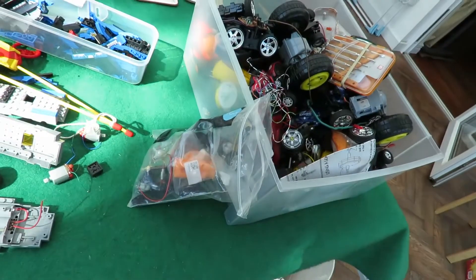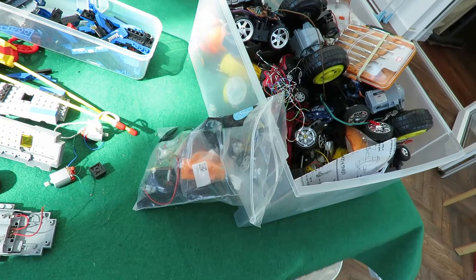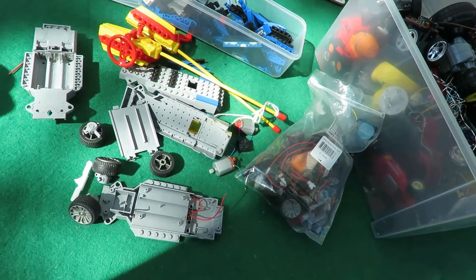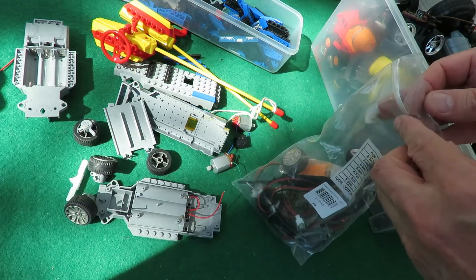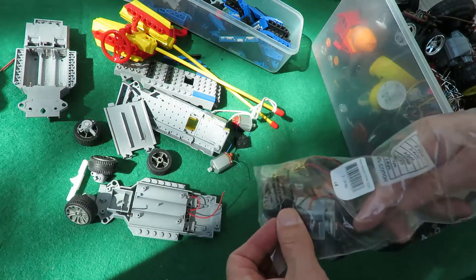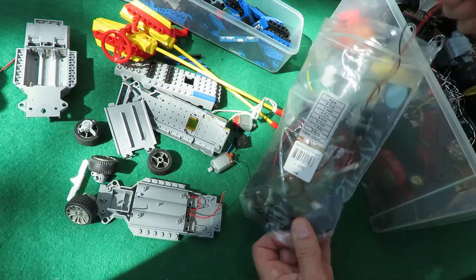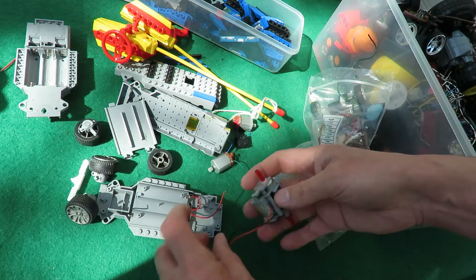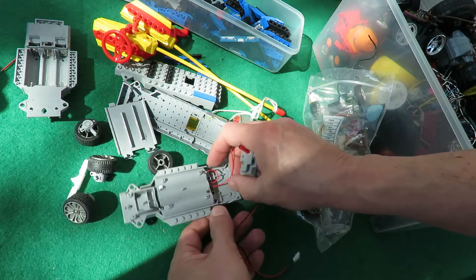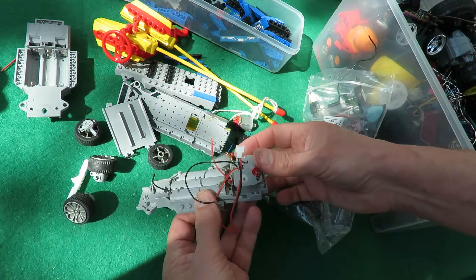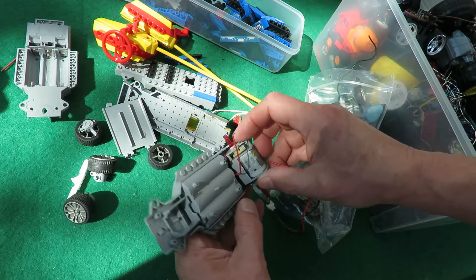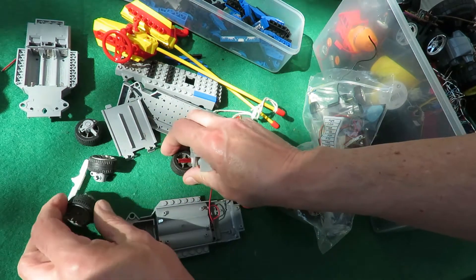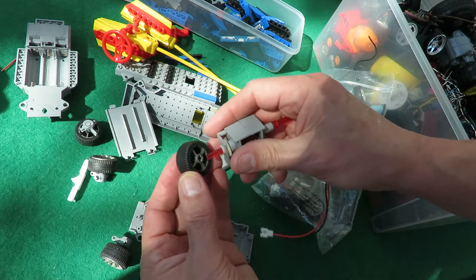Right. Going through another one of my junk boxes. I think I found the original gearbox. Put the camera back down. I've obviously used it for something else. I reckon that goes in there. It's the right colour, isn't it? I don't know. I reckon that's the right one because those are the wheels for that. That is the back wheel and that fits on there.